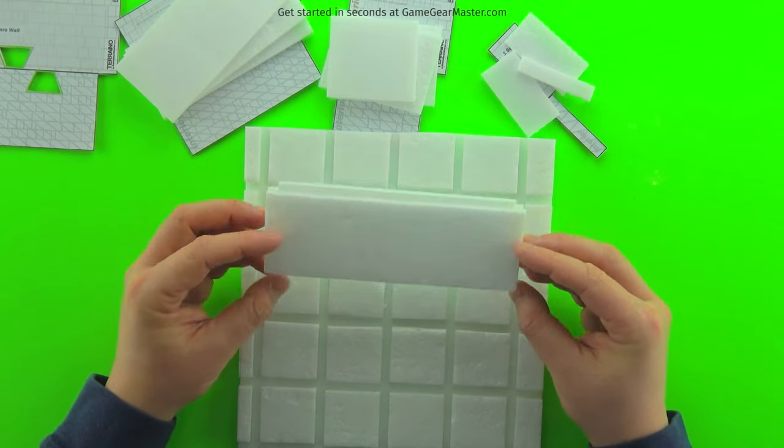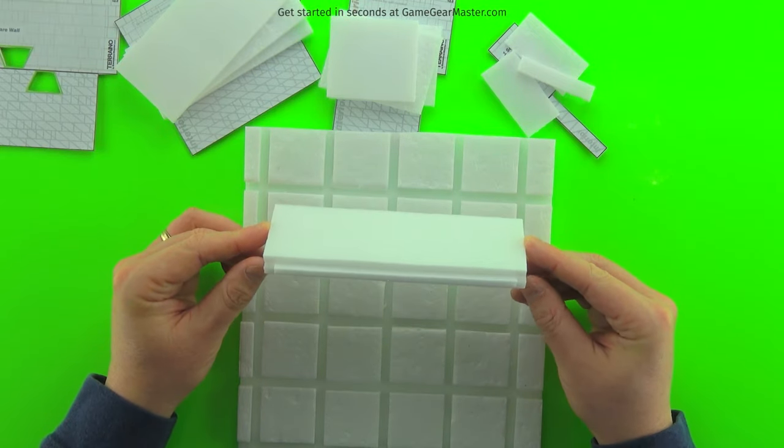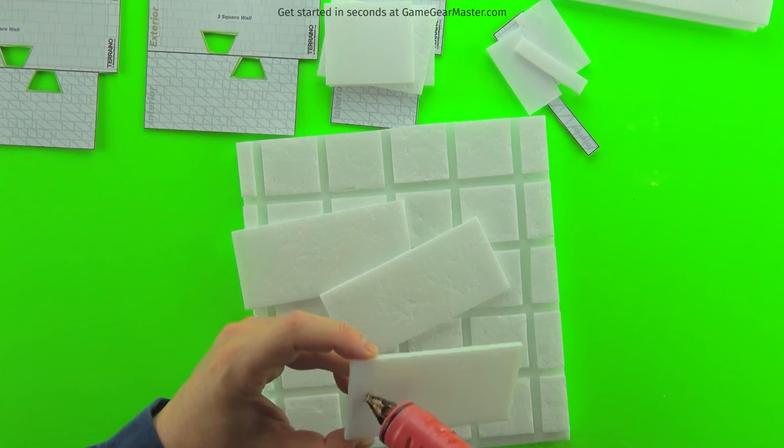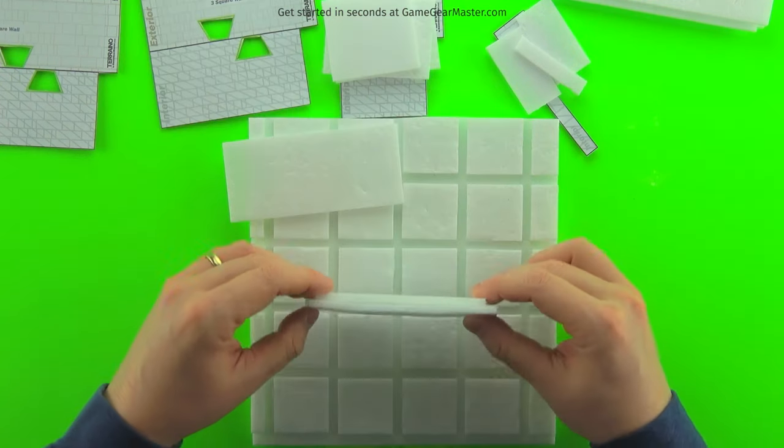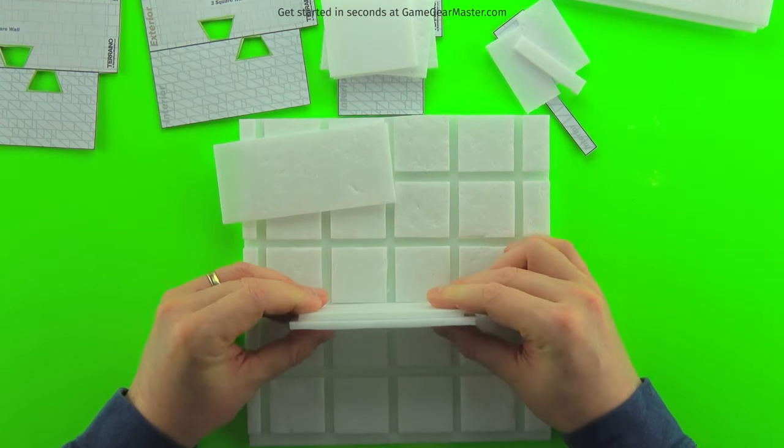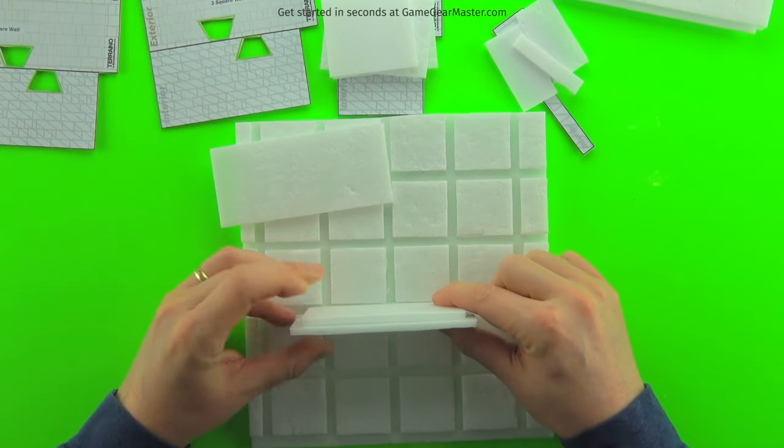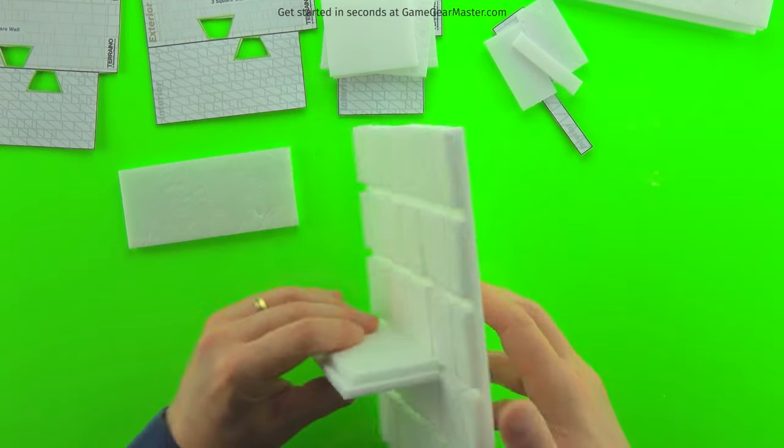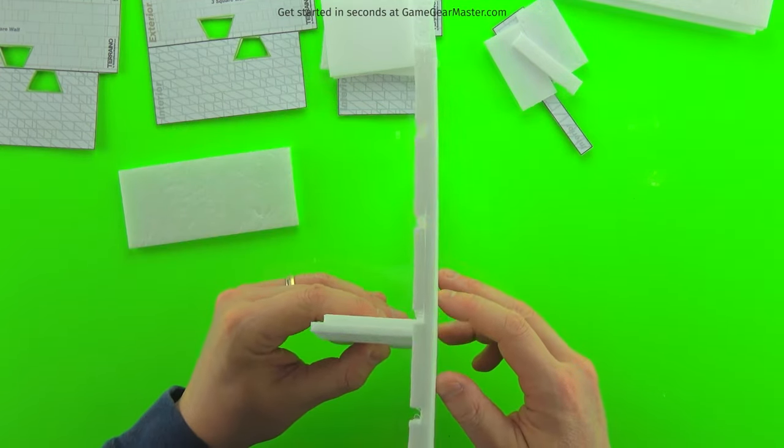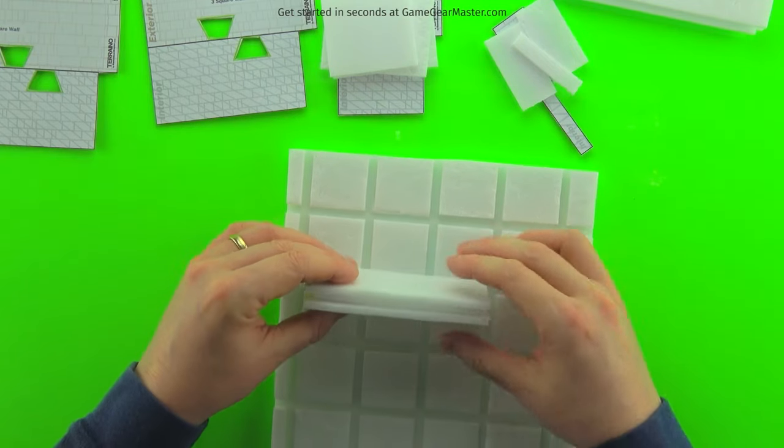There you go, one finished four square wide wall. And the procedure is the same for each one of the walls. Glue on the center piece, make sure the sides are even. Check the depth of the tongue and then add the other side and you're done.